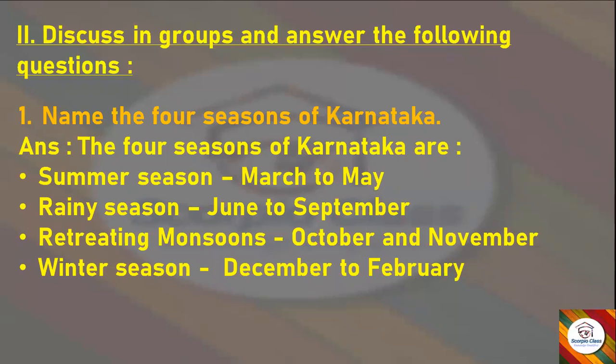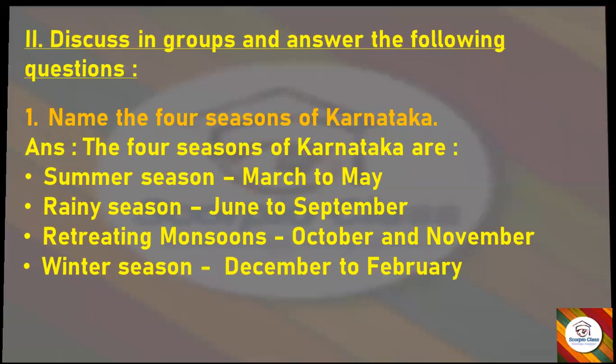First question: Name the four seasons of Karnataka. Answer: The four seasons of Karnataka are — Summer Season from March to May, Rainy Season June to September, Retreating Monsoons October and November, and Winter Season December to February.